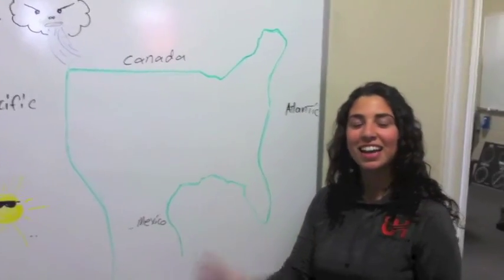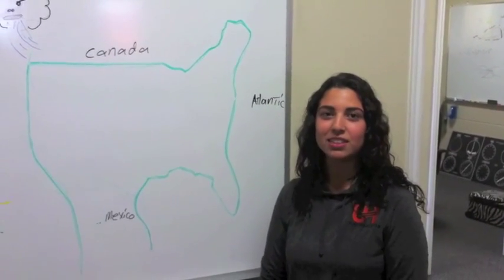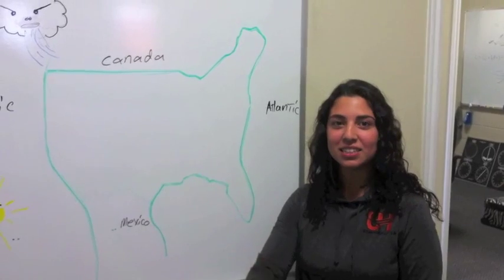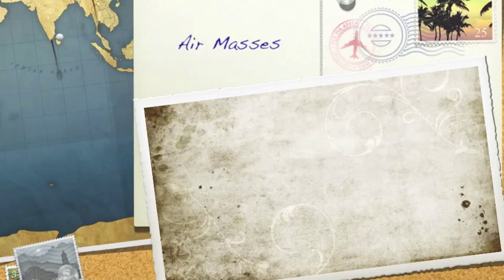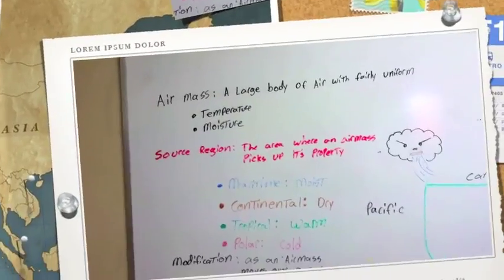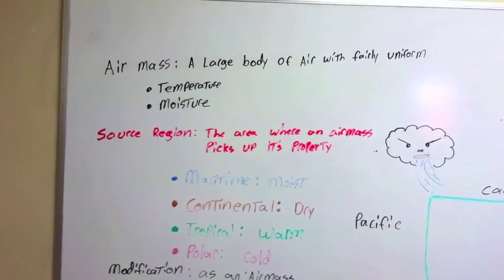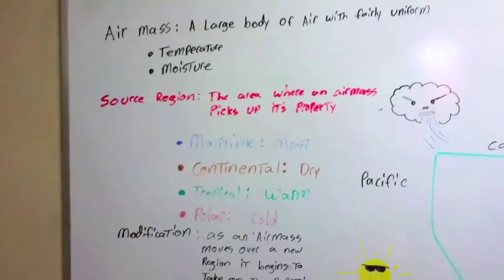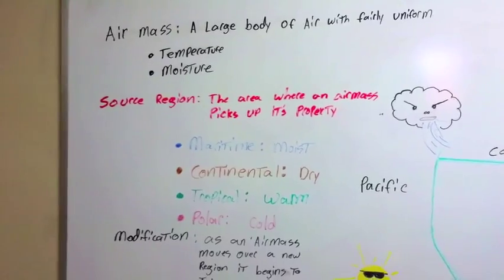Hi, my name is Ivana and I'm a student at Utah Helicopter at station U-77, and with me is Justin. We're going to talk about air masses today. An air mass is a large body of air with fairly uniform temperature and moisture. The source region is the area where the air mass picks up its properties.